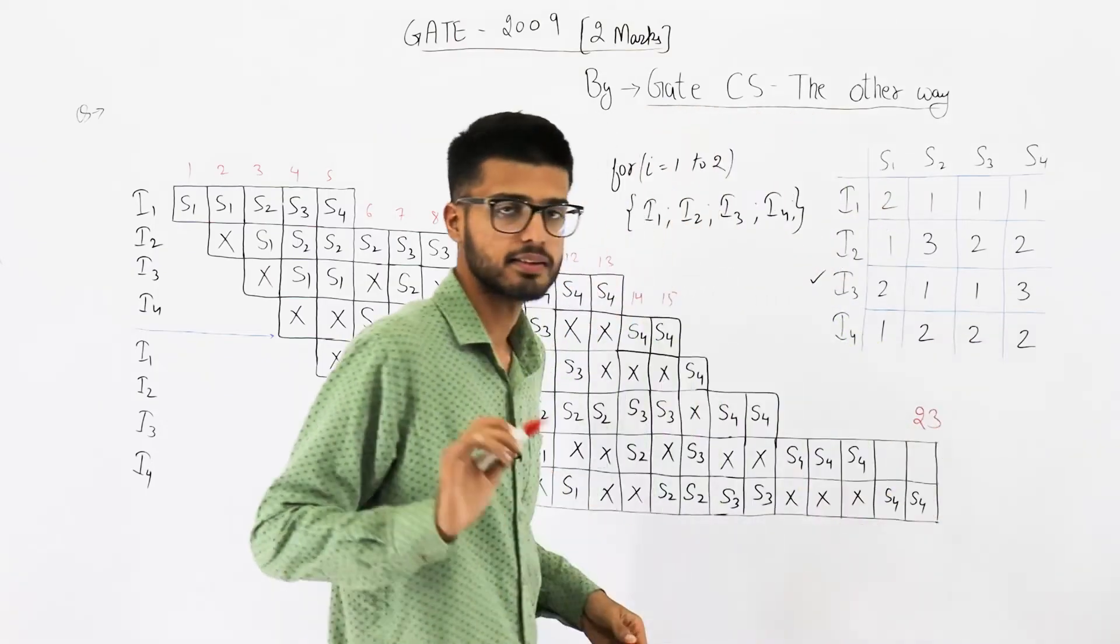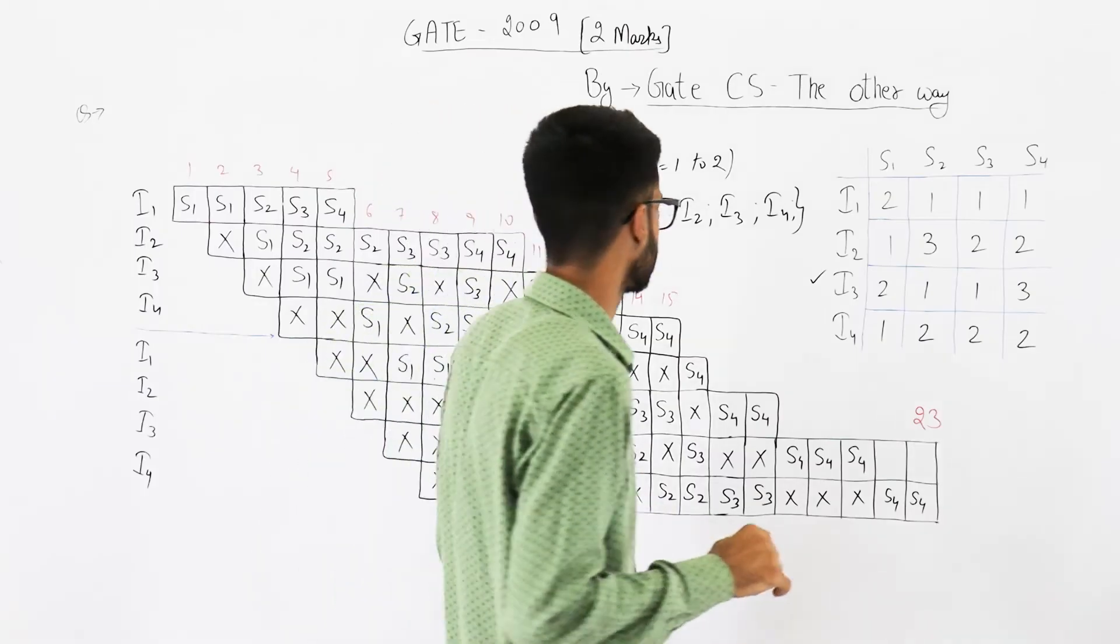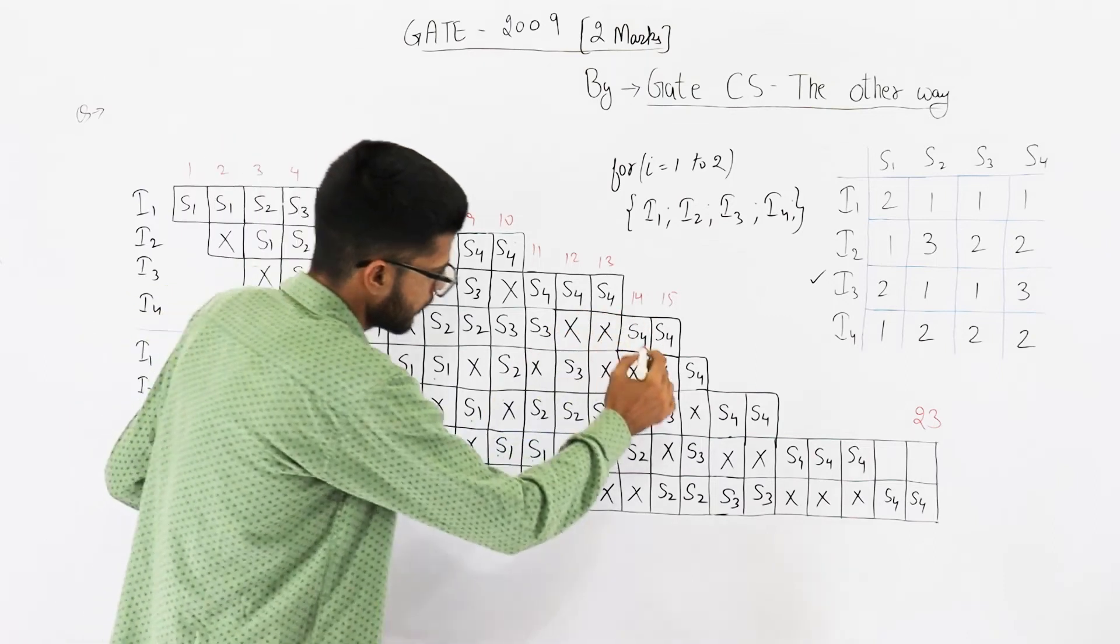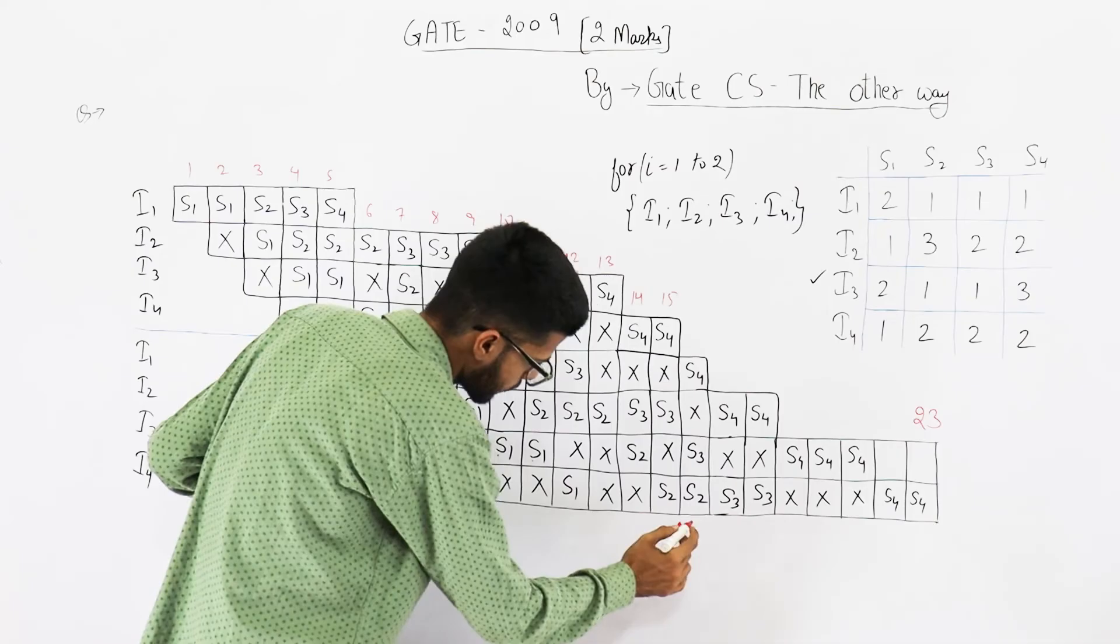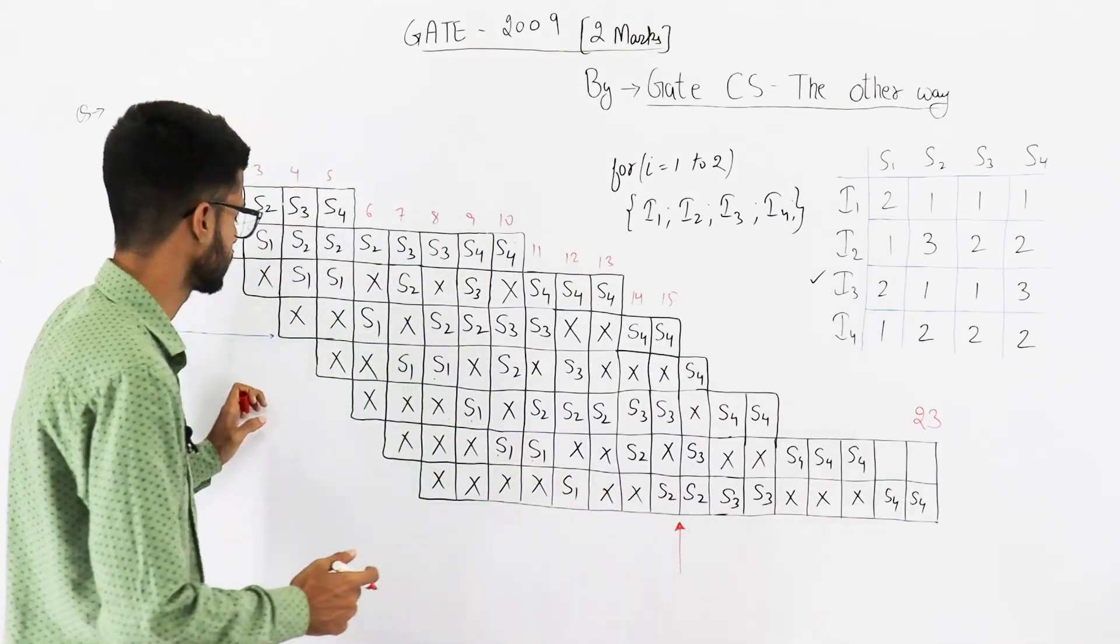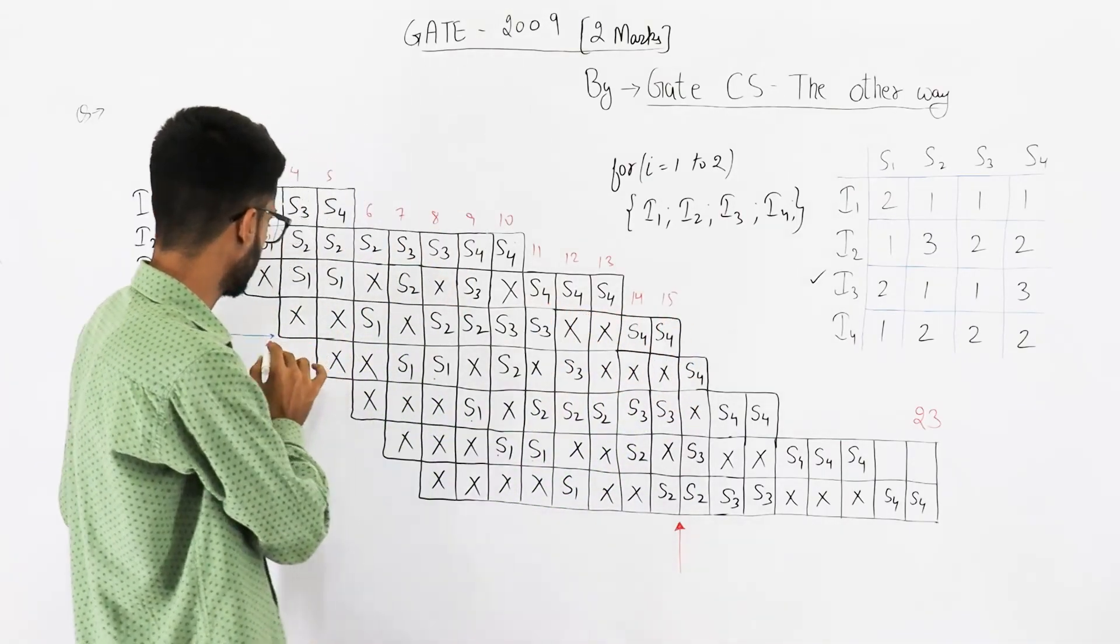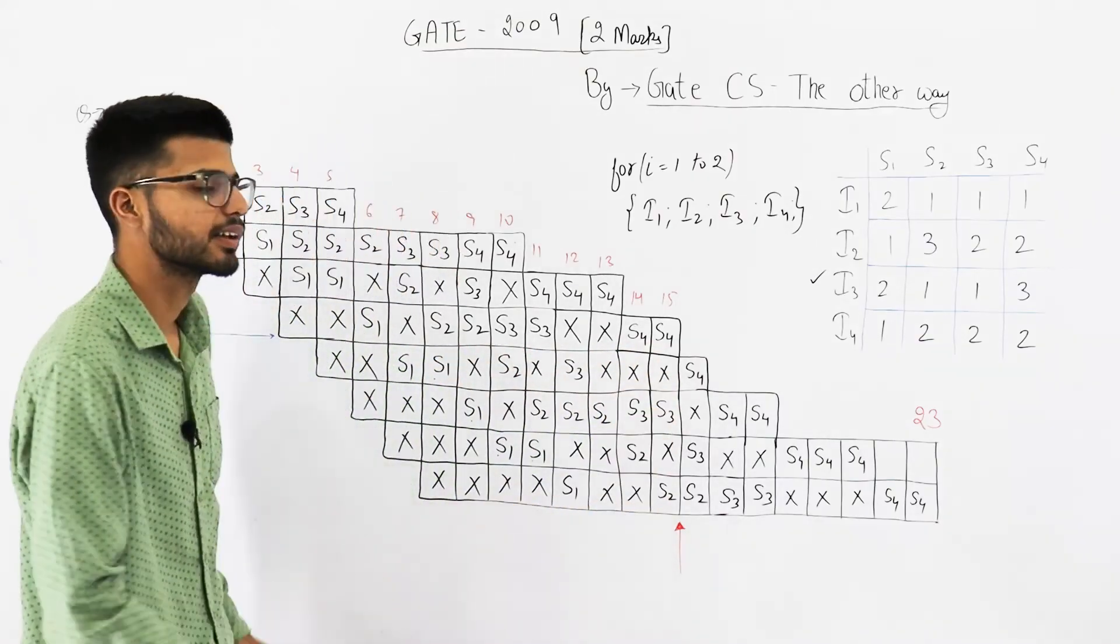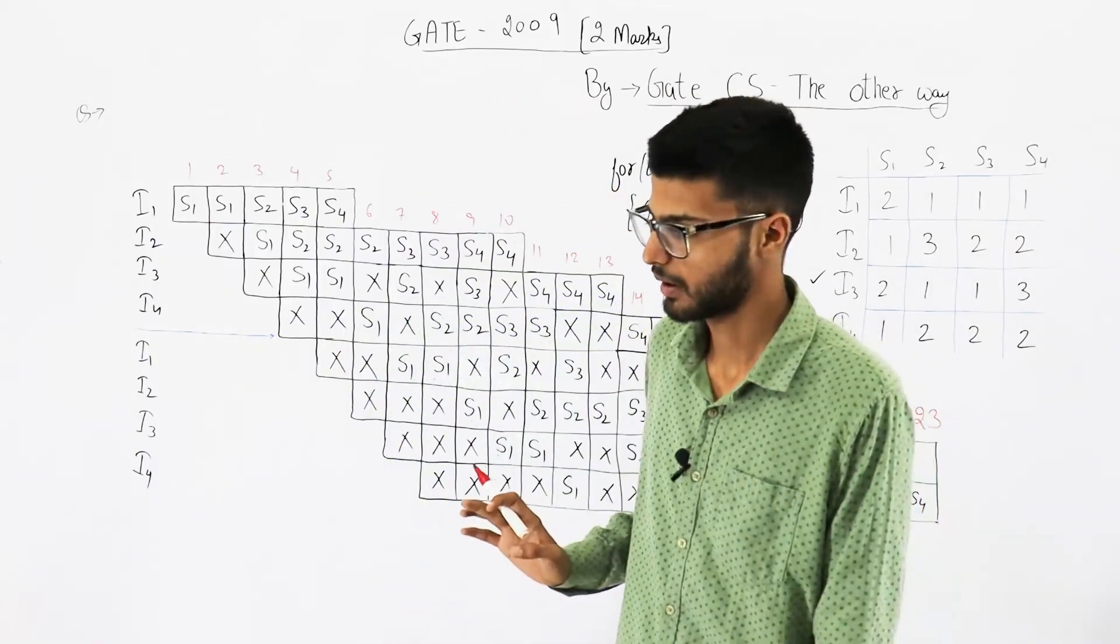So your answer to this question is 23. Please don't write 30 as answer to such questions. I've already discussed what's the mistake here. In those methods what they're doing is they're not using these many clock cycles. This part - from here to here - these clock cycles are being wasted. So that is a big blunder, don't do such things.